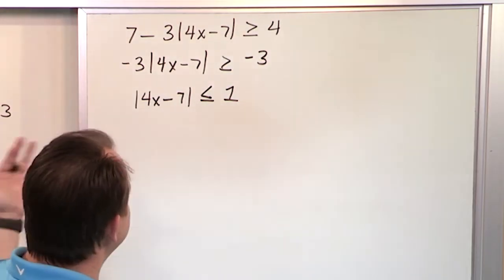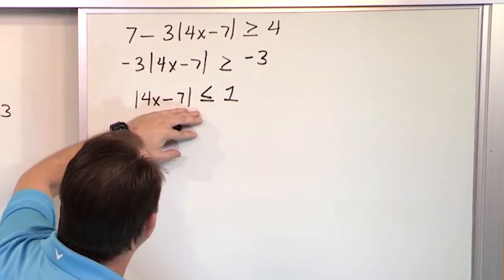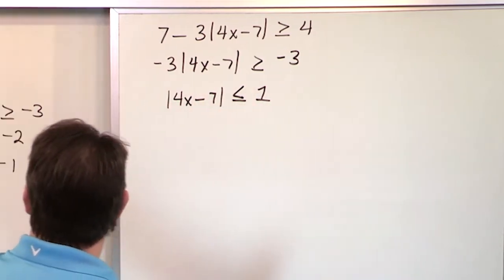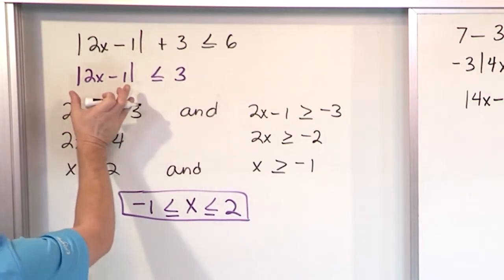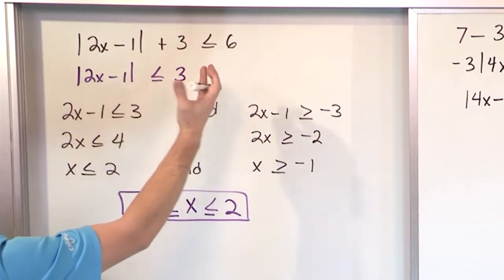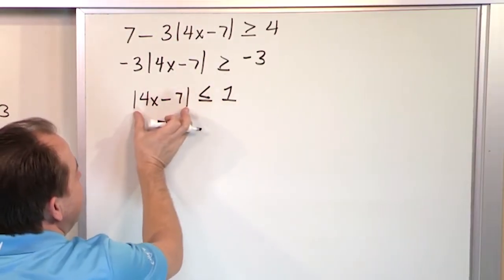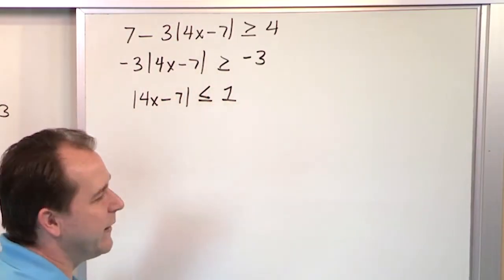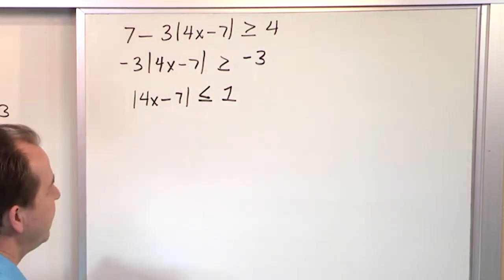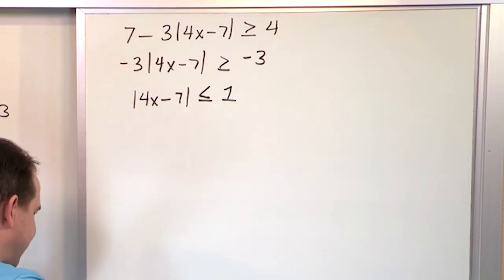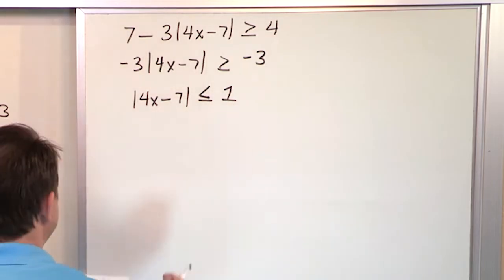So now we have it in the form of everything we've seen before: an absolute value, some inequality, and a number. This is an absolute value less than or equal to a number, meaning the expression has to be less than one distance unit away from the origin — between plus and minus 1. So that means it's an 'and' as well, because it's an absolute value less than or equal to a number.